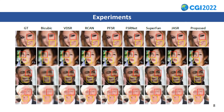We also visualized the super-resolution images of some representative methods. As shown in the figure, because the proposed method enhances the accuracy of the semantic maps and improves the guidance efficiency, it can reconstruct richer texture details, such as eyes and mouth.